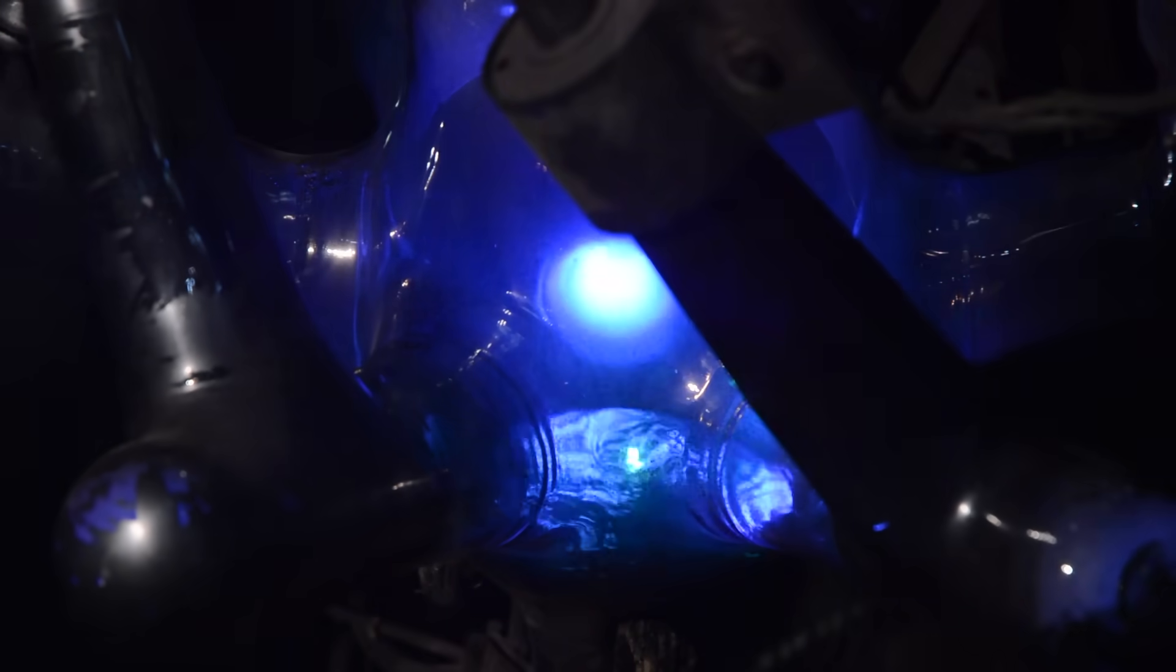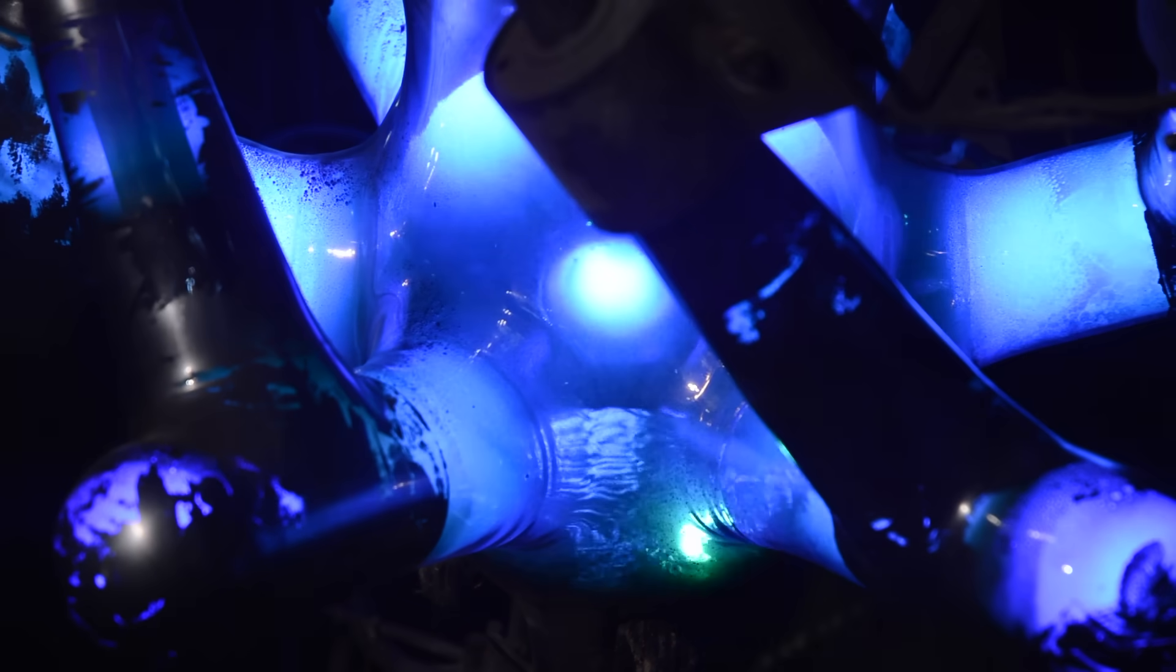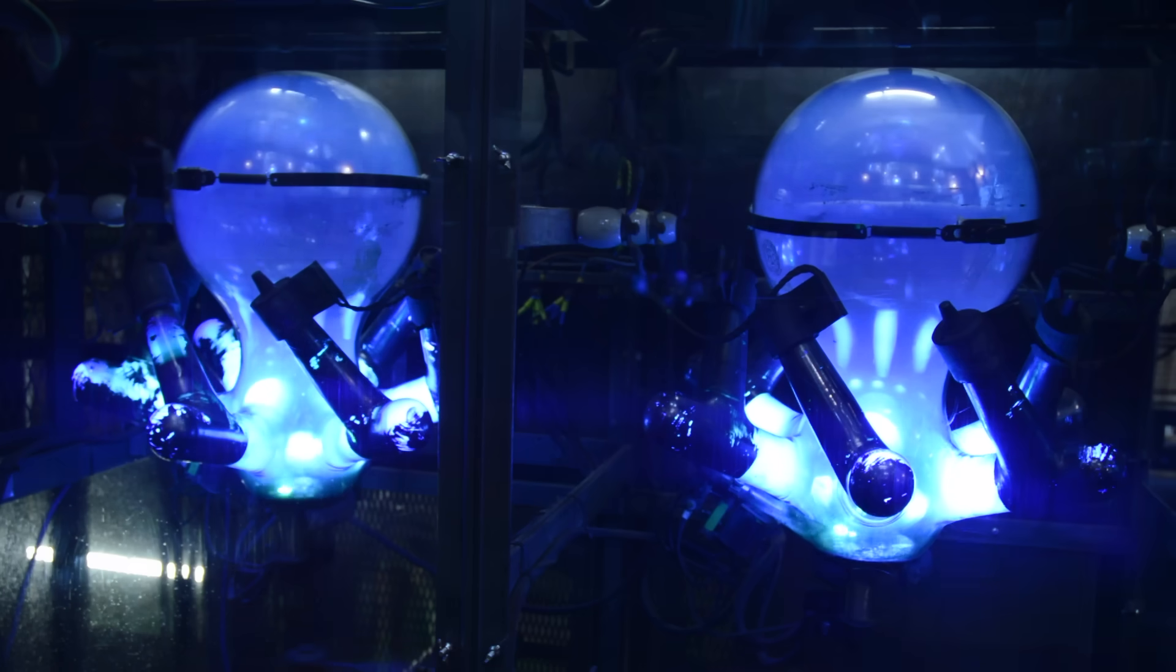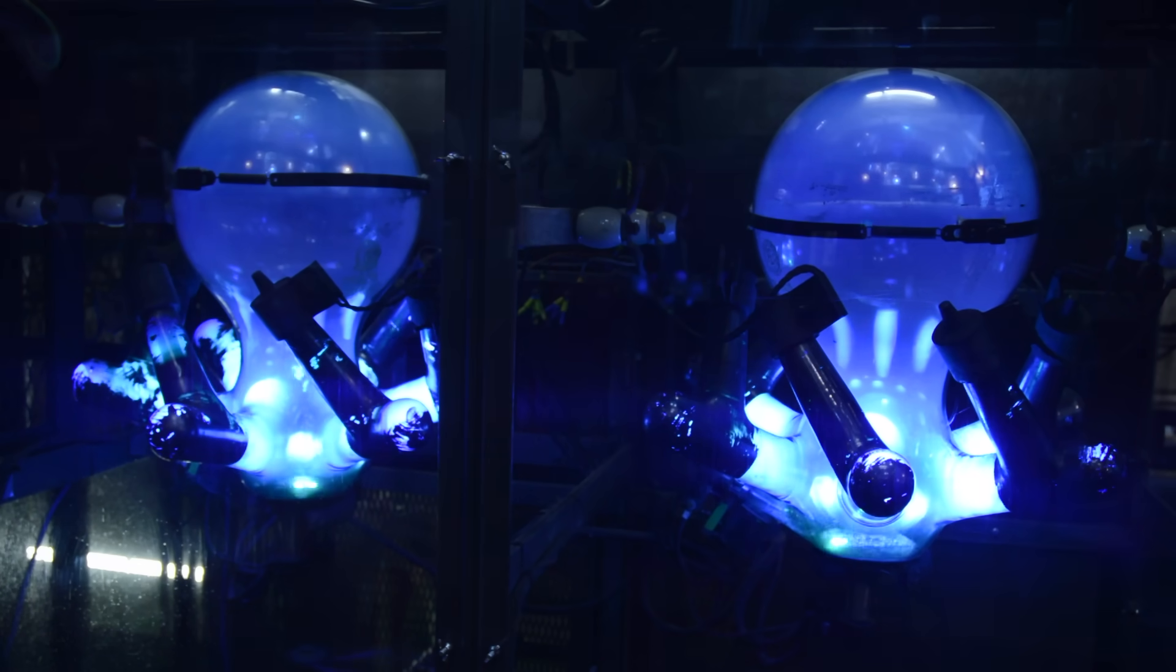If I switch that off and connect a load which is 40 amps, you'll see that gets brighter again. And the meter is now reading 40 amps. And with the two together, that's as bright as we will go today.